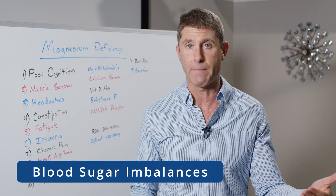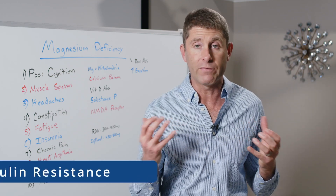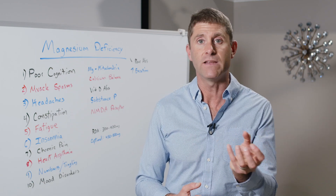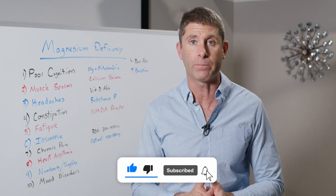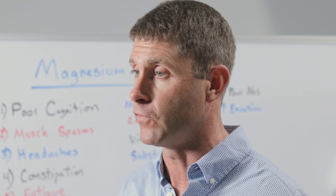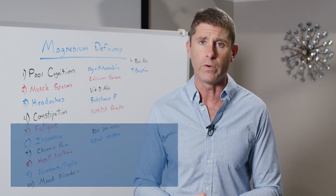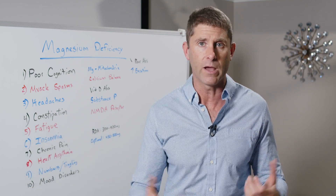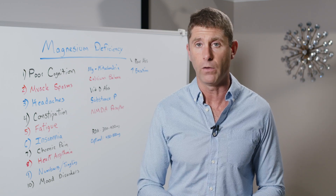Blood sugar imbalances and insulin resistance are a key cause — we actually need insulin to get magnesium into the cell. Without insulin sensitivity, magnesium can't get into the cell to balance the calcium-to-magnesium ratio, act on the NMDA receptor, reduce substance P levels, or optimize vitamin D absorption. Anyone with insulin resistance, prediabetes, or diabetes is magnesium deficient — we need to upregulate their magnesium levels as part of helping them get well.